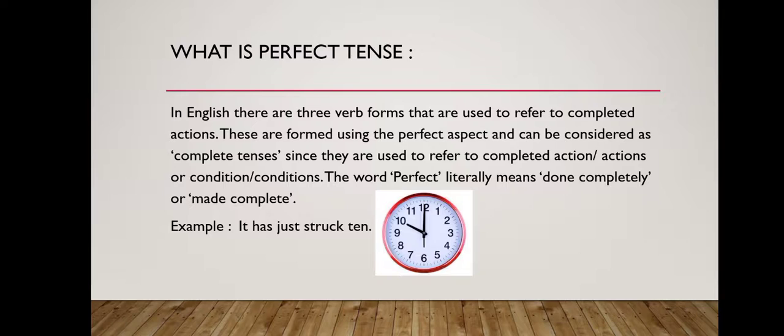In English, there are three verb forms that are used to refer to completed actions. These are formed using the perfect aspect and can be considered as complete tenses since they are used to refer to completed actions or conditions. The word perfect literally means done completely or made complete.